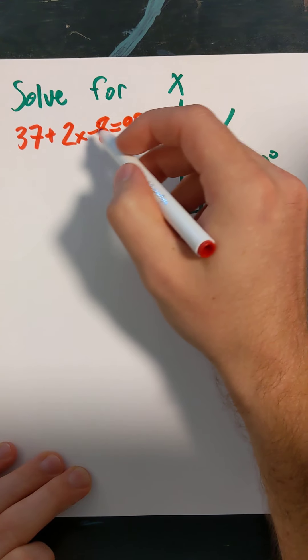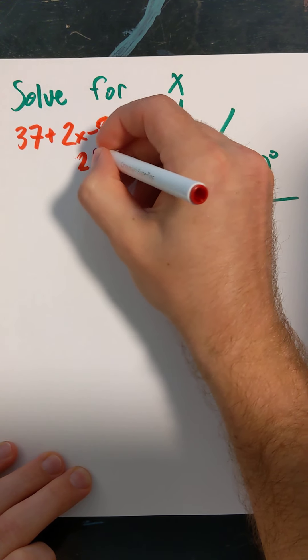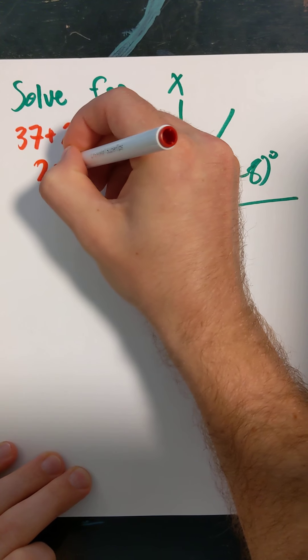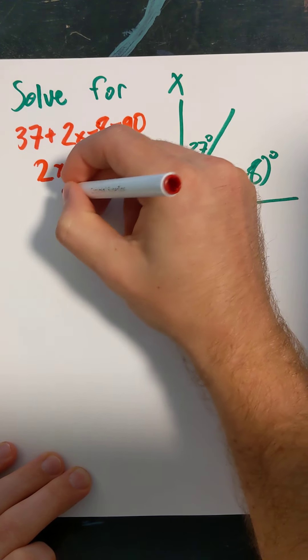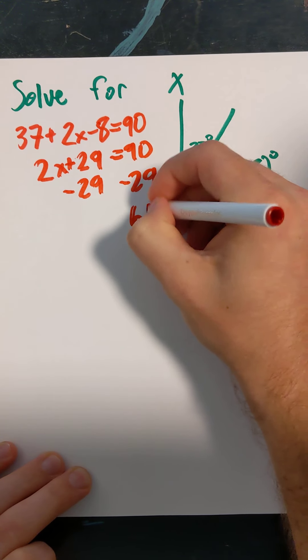Let's go ahead and combine some like terms. Well, 37 minus 8 is 29, and we have 2X plus 29 equals 90. Subtract 29 from each side. We got 61.